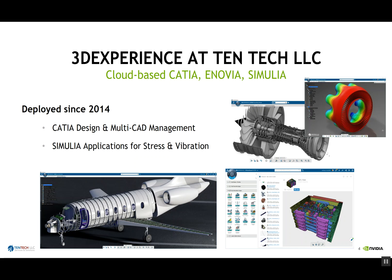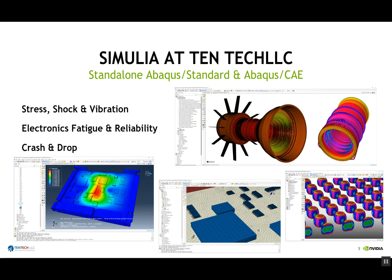We see examples of simple component level, sub-assemblies, major assemblies, and even top-level assemblies such as aircraft. We also use the standalone version of Abaqus Standard and Abaqus CAE for stress, shock, vibration, electronics fatigue and reliability, and crash and drop test. We have a number of applications we wrote ourselves that sit on top of Abaqus Standard and Abaqus CAE, covering major systems and subsystems as well as detailed analysis of ball grid arrays for fatigue and reliability of electronics.